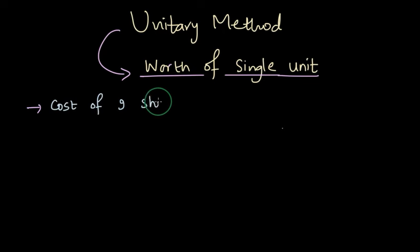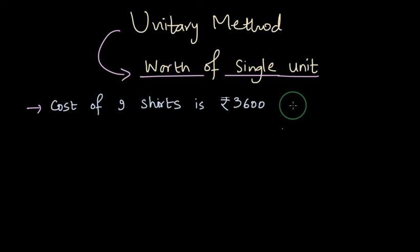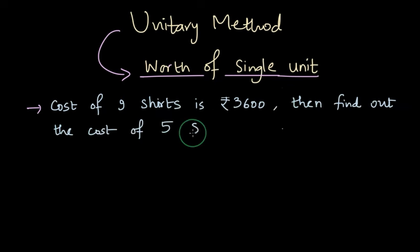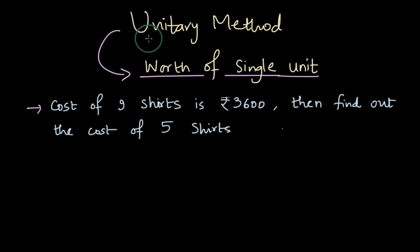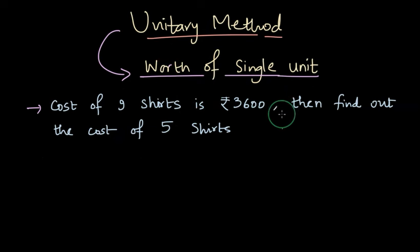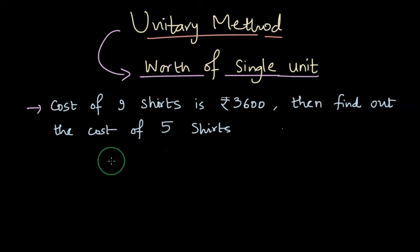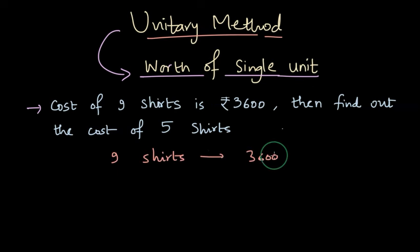Cost of 9 shirts is 3600 rupees. Find out the cost of 5 shirts. This problem can be solved using different methods, and one of them is the unitary method. In order to find the answer using the unitary method, remember that we need to find the worth of a single unit. Here the unit is a shirt, and worth is basically the cost. So we have 9 shirts costing 3600 rupees.